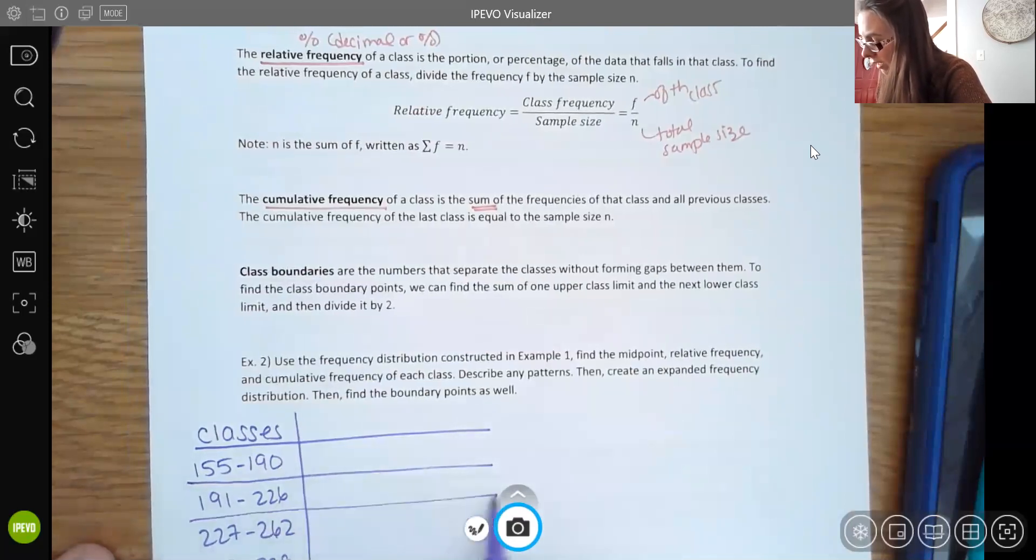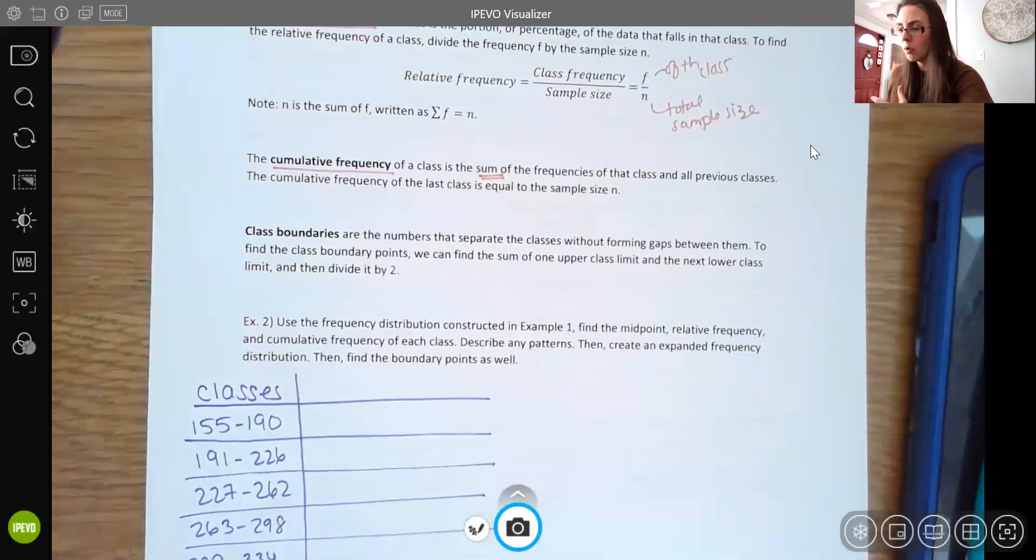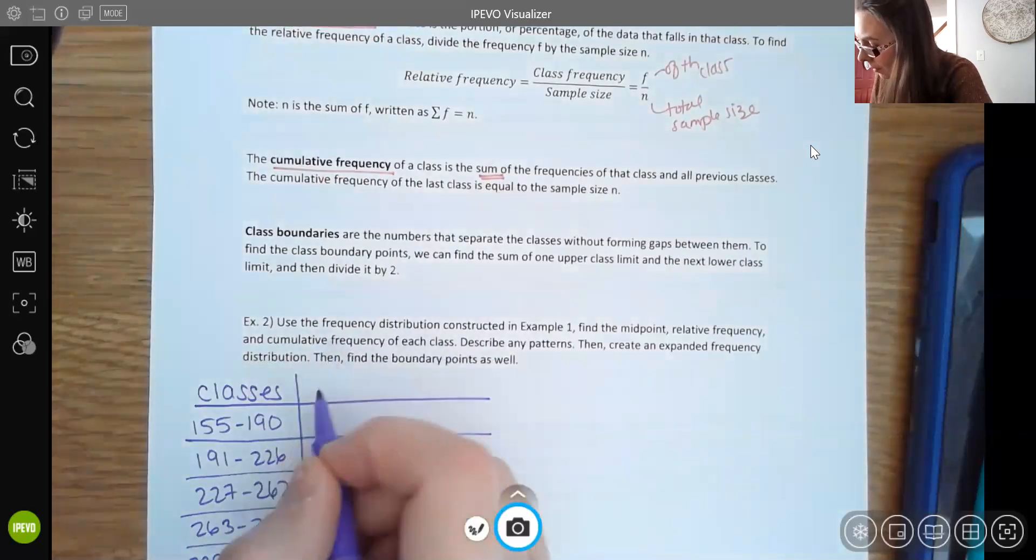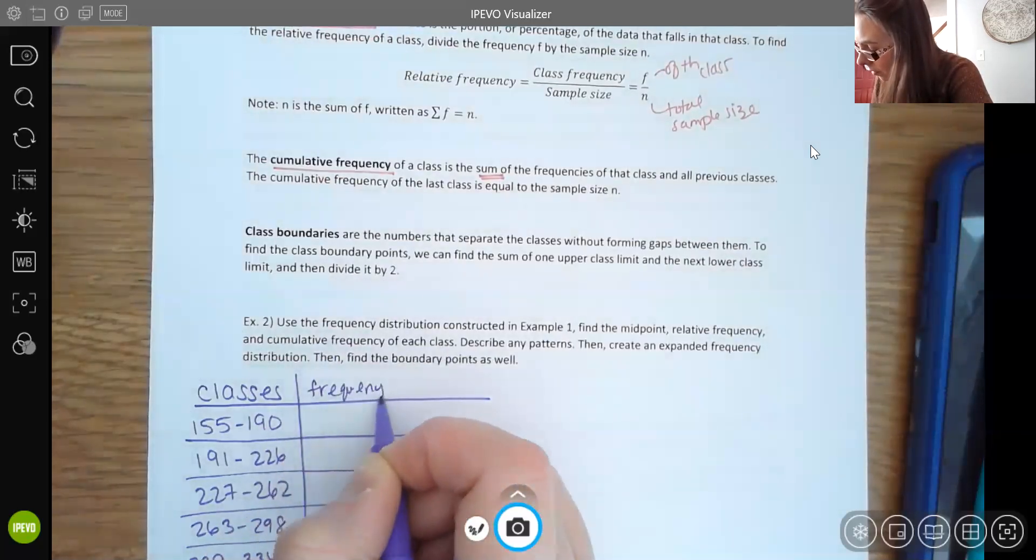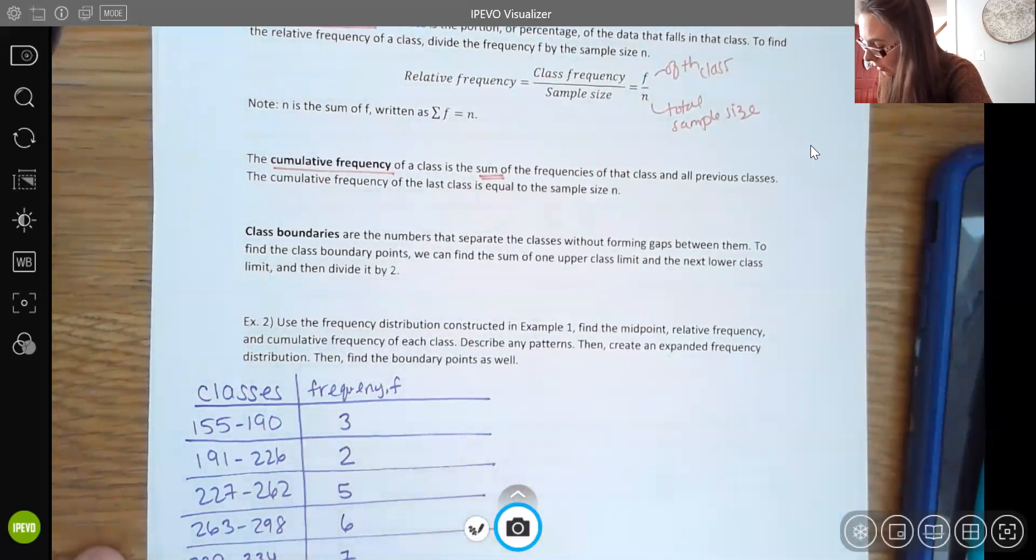As you're watching the video, you may be saying that's easy. I know how to count things, I know how to tally, I know how to take an average. And that's fine. But it's good to just go through it on your own and see how that process works. So I'm going to rewrite the frequency. So we had three, two, five, six, seven, four, and three.